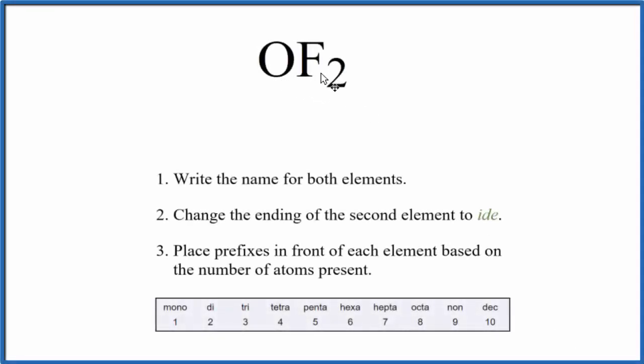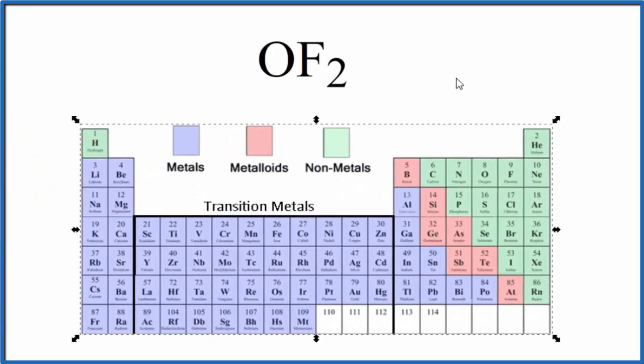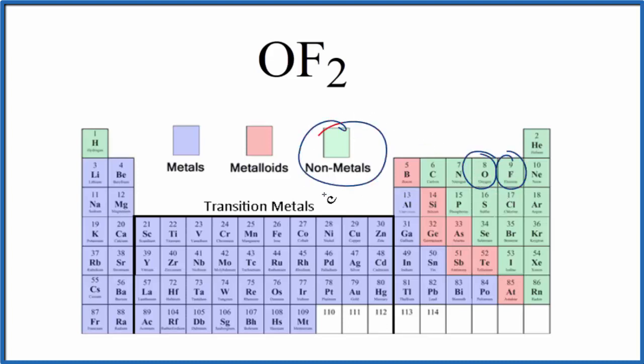To write the name for OF2, we first need to realize what type of compound we have. We can look on the periodic table and we can see oxygen that's right here next to fluorine. So we have two nonmetals.